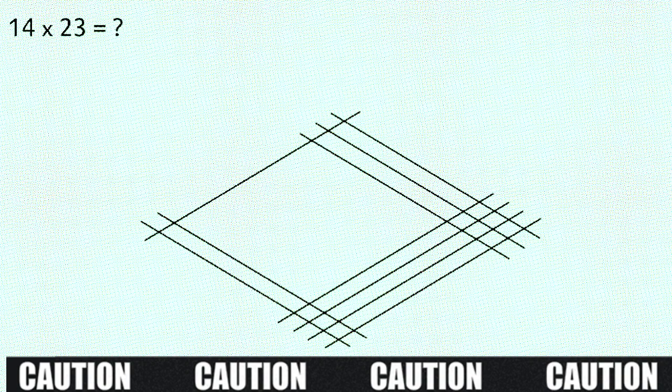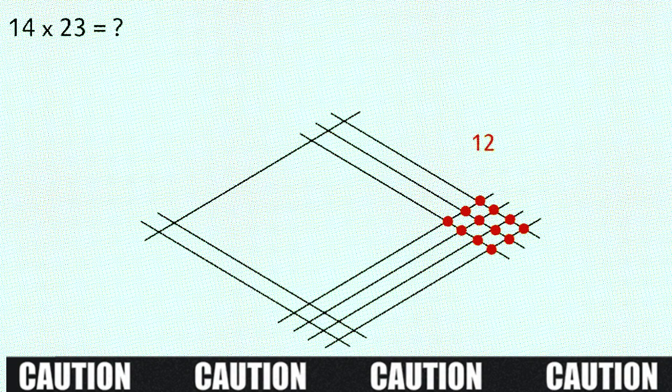And now let's count the dots. Starting from the right we have 1, 2, 3, 4, 5, 6, 7, 8, 9, 10, 11, 12. So we'll write 12 up here. But if this number is ever more than 9, in other words if it's a two digit number, we leave the last digit where it is, but we take the first number, carry it over to the next zone and add it to the number of dots in this zone. I'll show you.